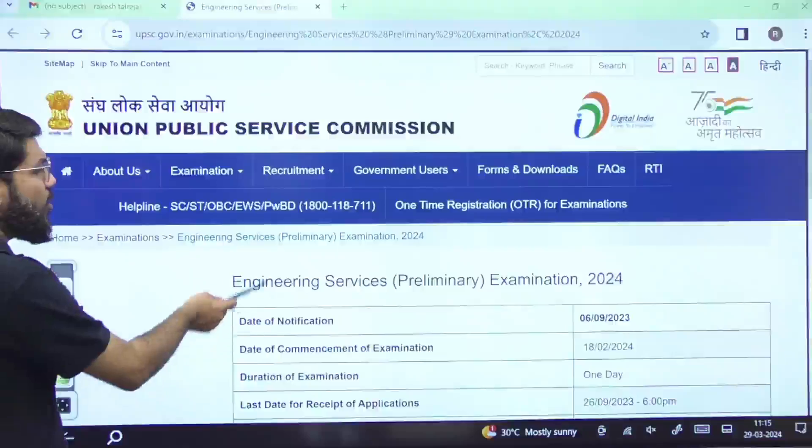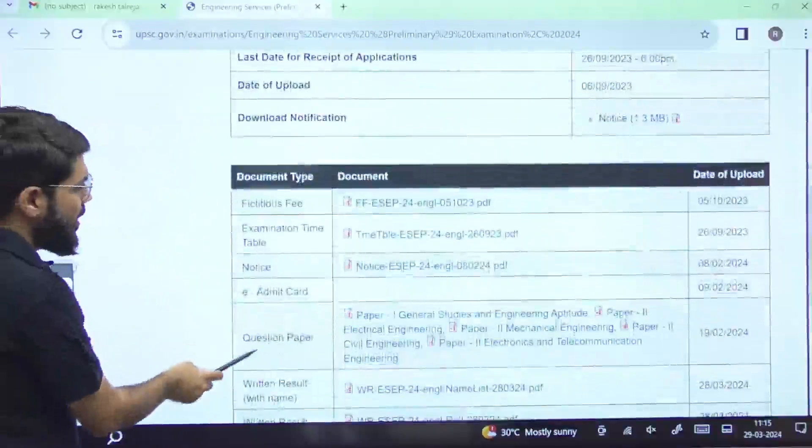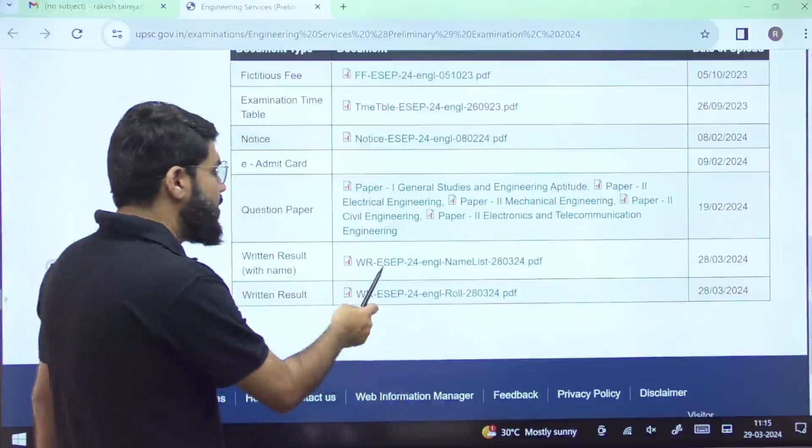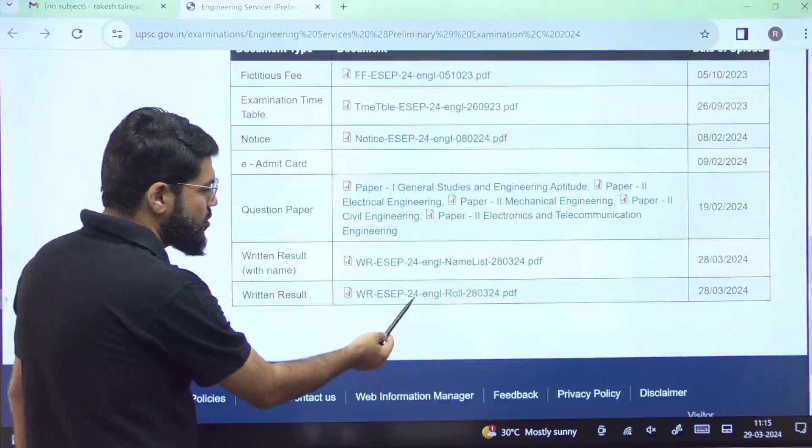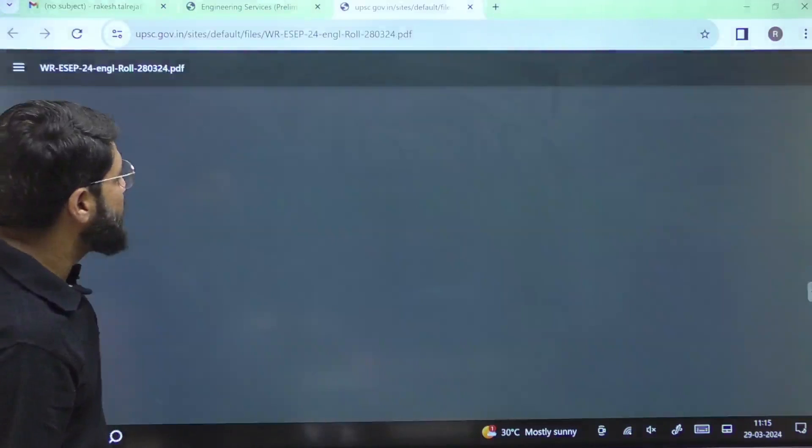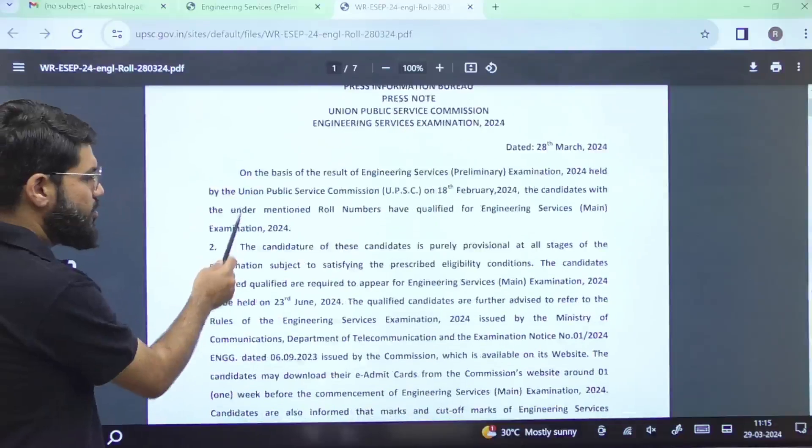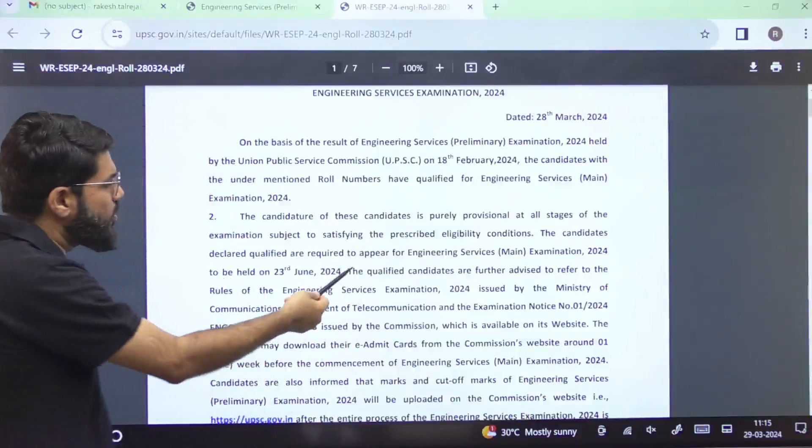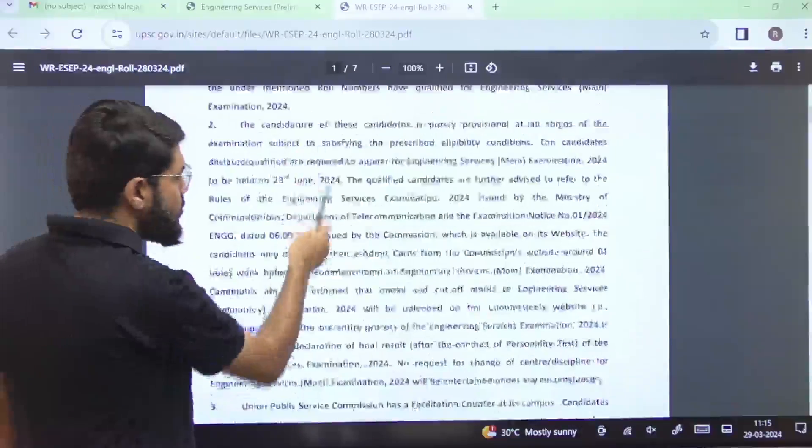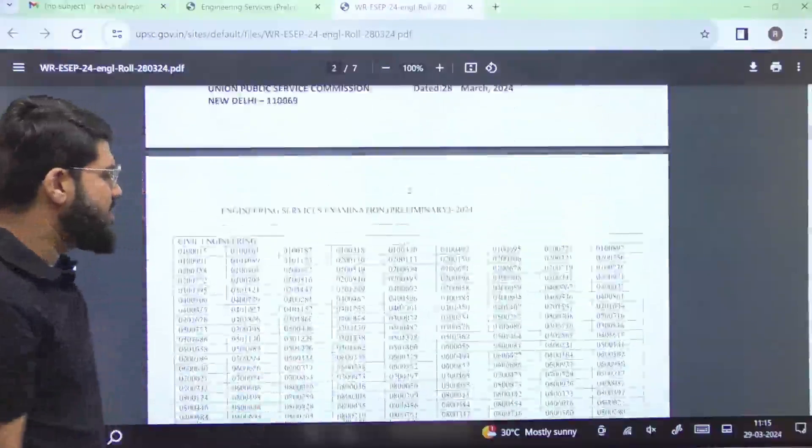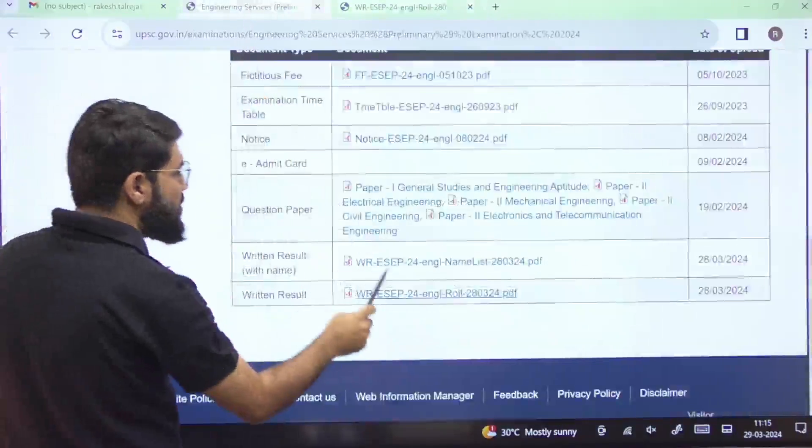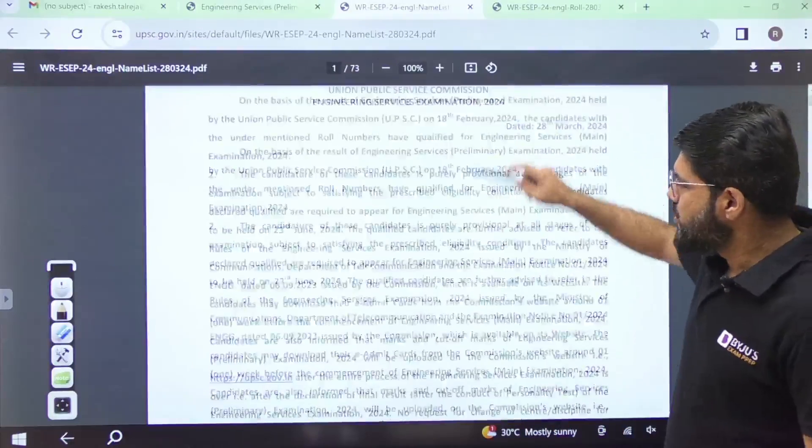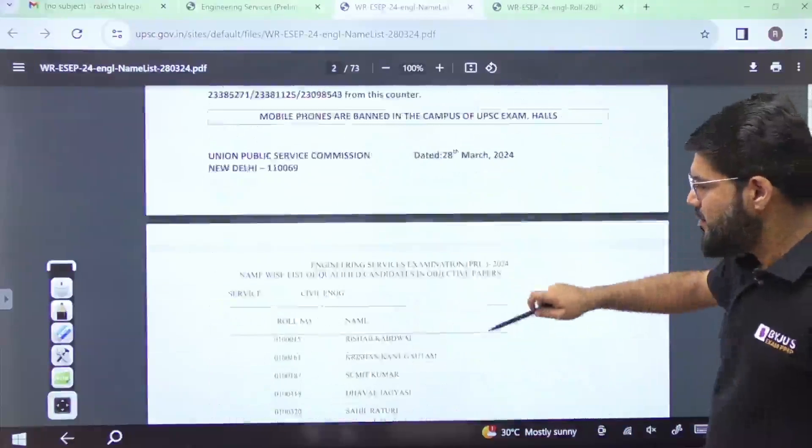Coming to the UPSC website, this time they have produced the results with the name list also. There's a regular list as always which contains the basic details - the exam was on February 18th and the mains on June 23rd. This is the result sheet as per roll numbers, but this time they've produced it with more clarity, along with the names of the students.